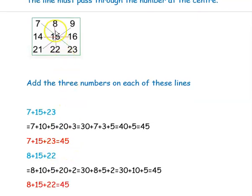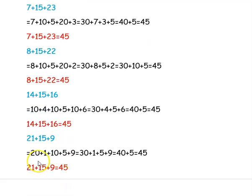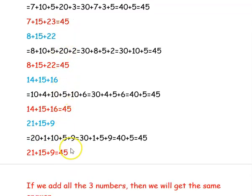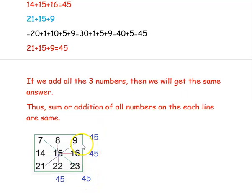The second line: 8 plus 15 plus 22. Adding 22 and 8 gives 30; 30 plus 15 is 45. The third line: 14 plus 15 plus 16. Adding 14 plus 16 gives 30; 30 plus 15 is 45 again. The fourth line: 21 plus 15 plus 9. Adding 21 plus 9 gives 30; 30 plus 15 is 45. So all four answers are 45 — the addition of all the numbers on each line is the same. This is the calendar magic and it works for all calendars.